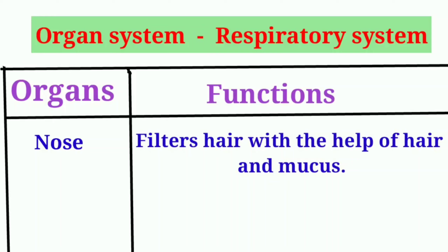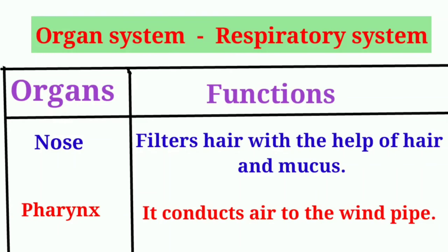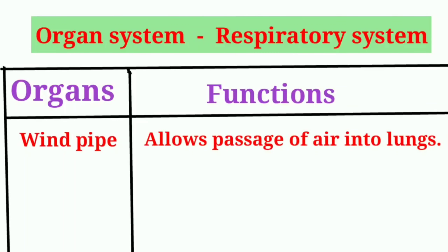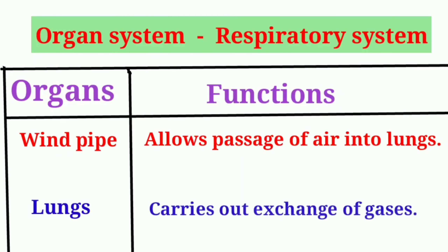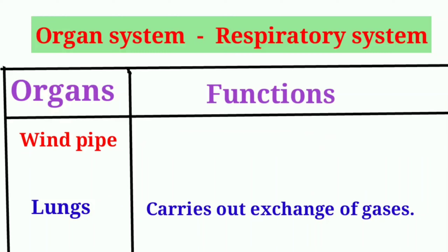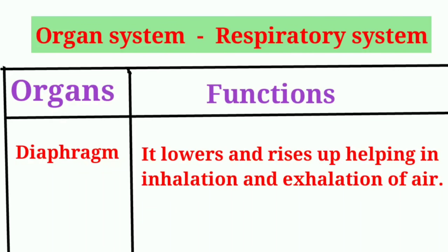Nose – filters hair with the help of hair and mucus. Pharynx – it conducts air to the windpipe. Windpipe – allows passage of air into lungs. Lungs – carries out exchange of gases. Diaphragm – it lowers and rises up, helping in inhalation and exhalation of air.